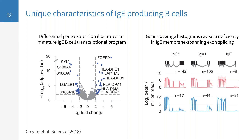I also wanted to present an example where splicing informed our understanding of these rare B cells. Gene coverage histograms of the heavy chain constant region sequences of different antibodies show that, as opposed to IgG1 and IgA1, IgE has very little coverage of the terminal two exons, which correspond to the membrane spanning domain. IgE B cells are deficient in membrane-spanning exon splicing, which has implications for our understanding of allergic memory — these B cells may be unable to receive activation stimulation as much as other isotypes through their B cell receptors.